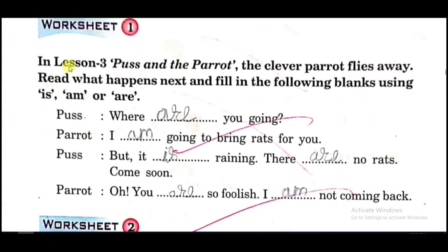We had studied Puss and the Parrot, in which the parrot was very clever, very fast, and was flying away. Now we have to learn what happens next and fill in the following blanks using is, am, or are.